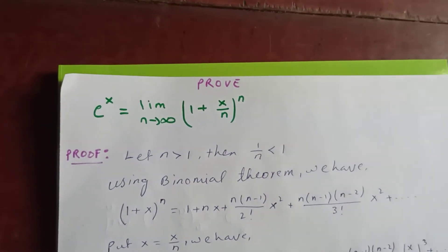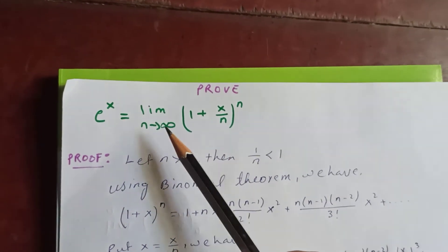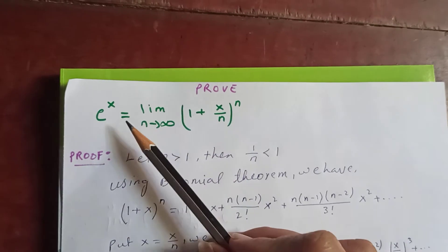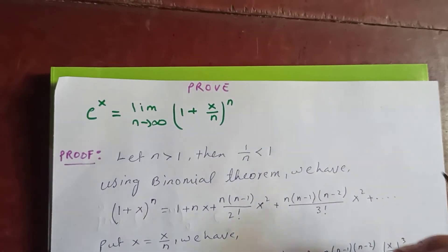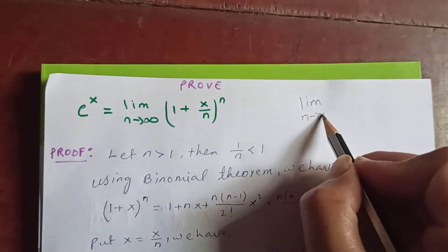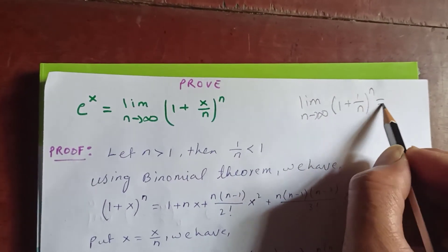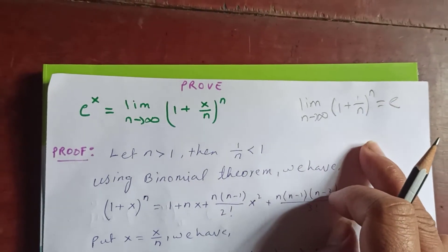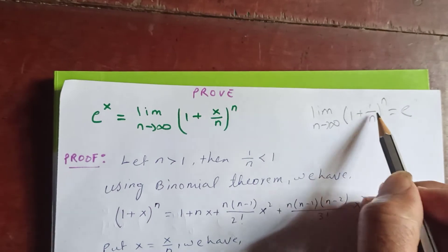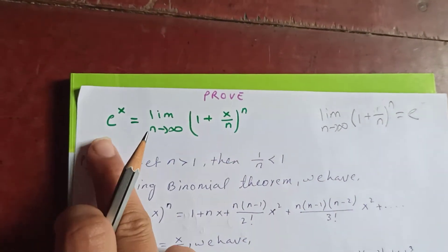Thanks for watching my video today. Let's evaluate this limit. The limit as n tends to infinity of (1 + x/n)^n is e^x. In the previous video we proved that the limit as n tends to infinity of (1 + 1/n)^n is just e. So it's the same thing — if you put x here, it becomes this. Let's prove this limit tends to e^x.